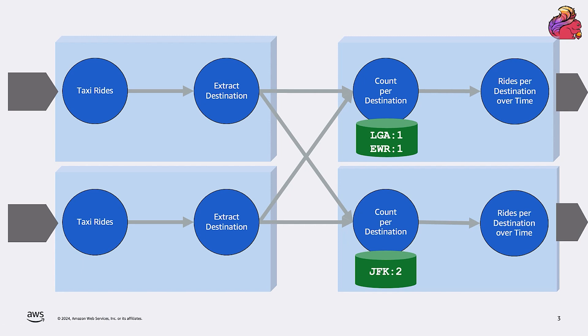Something very important to understand is that the state is per subtask. So each subtask has its own local state, or the state of the keys, the trips to the airports, that that subtask is handling. And the state is not replicated across subtasks or across the cluster.